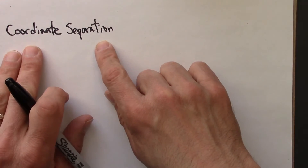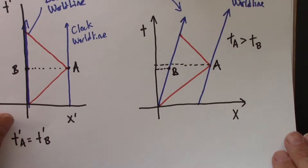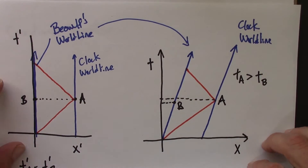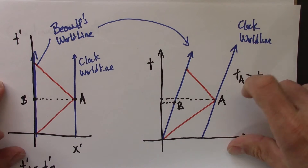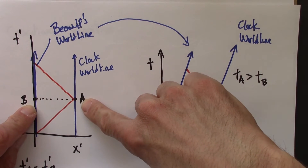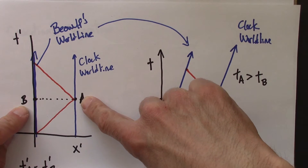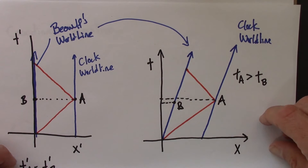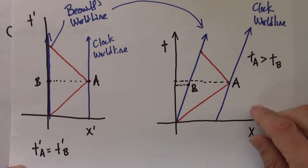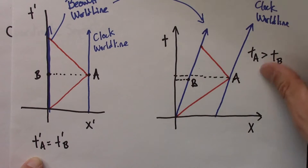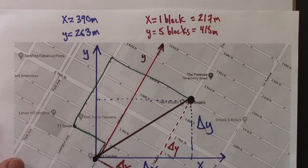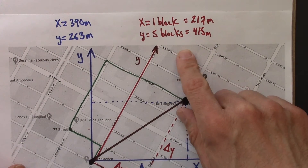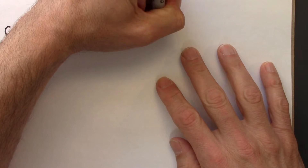What would that look like in spacetime? It's basically the same thing. Instead of looking at a map in x and y, we look at a spacetime diagram in x and t, and then we read off the coordinates of our two events, a and b. We've seen that in different reference frames you would get different time values and hence different time intervals. That's very similar to getting different coordinate values in space. The analog in special relativity is what we call coordinate time.